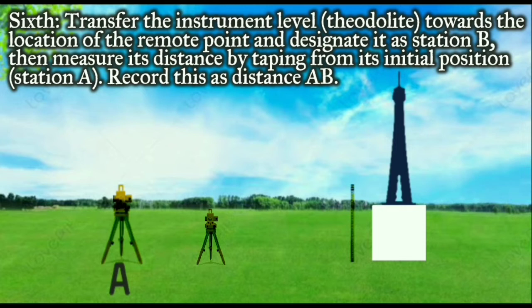Sixth, transfer the instrument level towards the location of the remote point and designate it as Station B. Then measure its distance by taping from its initial position, Station A, and record this as distance AB.